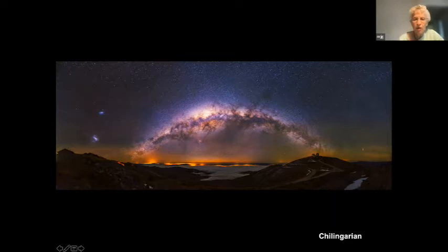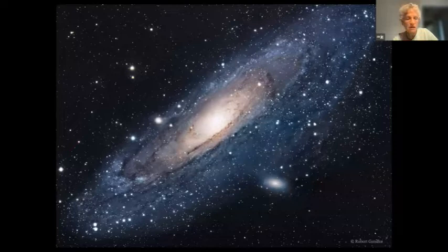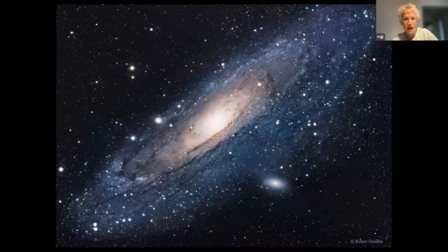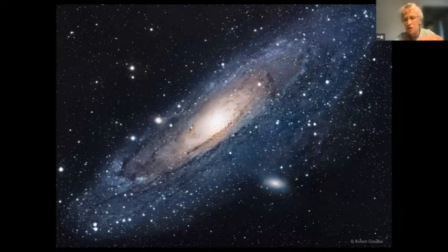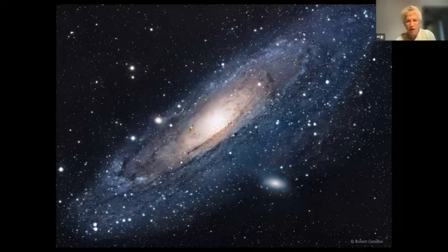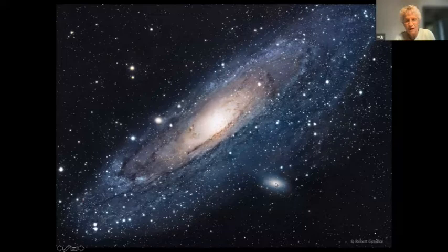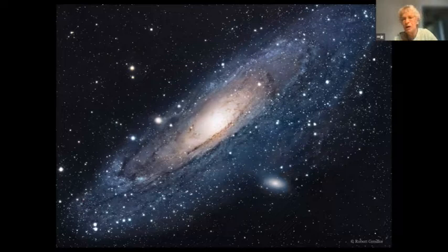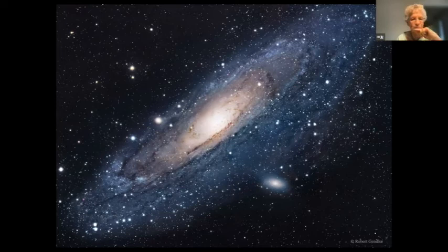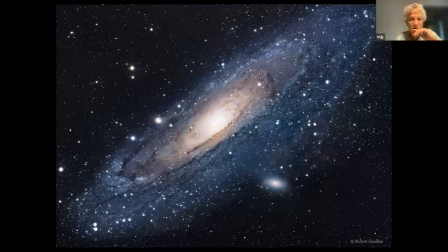The Milky Way has a large companion, Andromeda, which you can see with your naked eye from the northern hemisphere. These three galaxies - the large Magellanic Cloud, the small Magellanic Cloud, and Andromeda - are the only three galaxies you can see with your naked eye from the surface of the Earth. Andromeda is about two and a half million light years from the Milky Way and is coming toward us at 250 kilometers per second. It will arrive here in about four and a half billion years when it will collide with the Milky Way and make a mess.